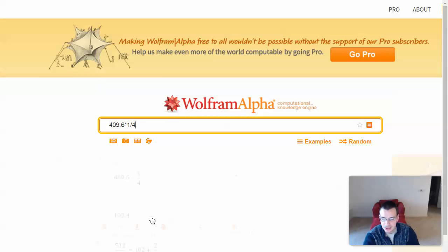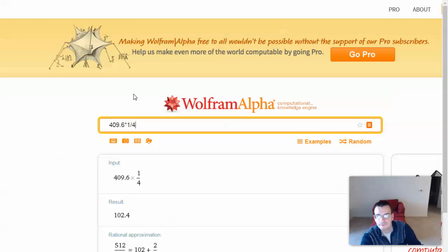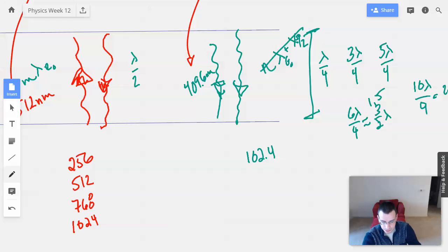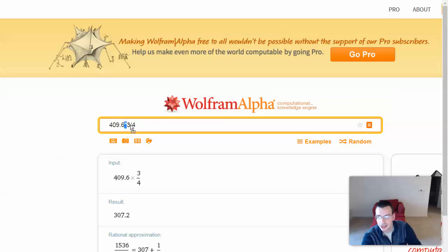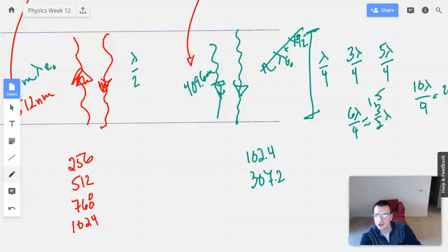Now, these are the possible thicknesses of the foil. So I'm going to do 409.6 times 1 divided by 4, and I get 102.4. Change that guy to a 3, 307.2. Change that guy to a 5, 512. Aha! Got one.